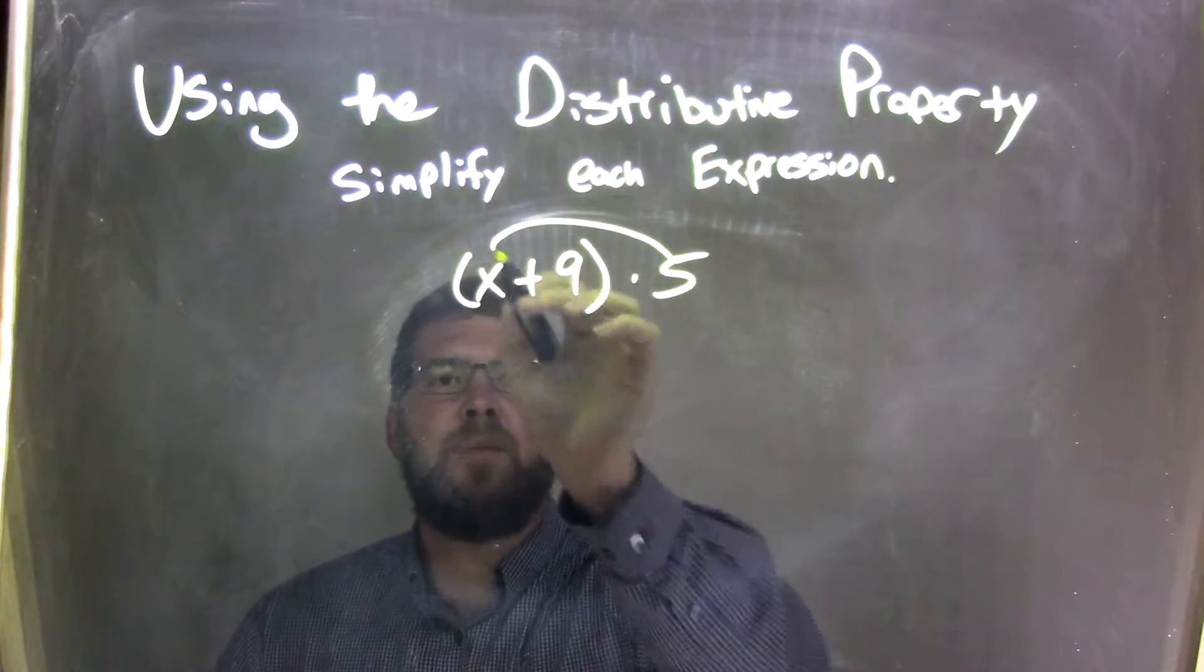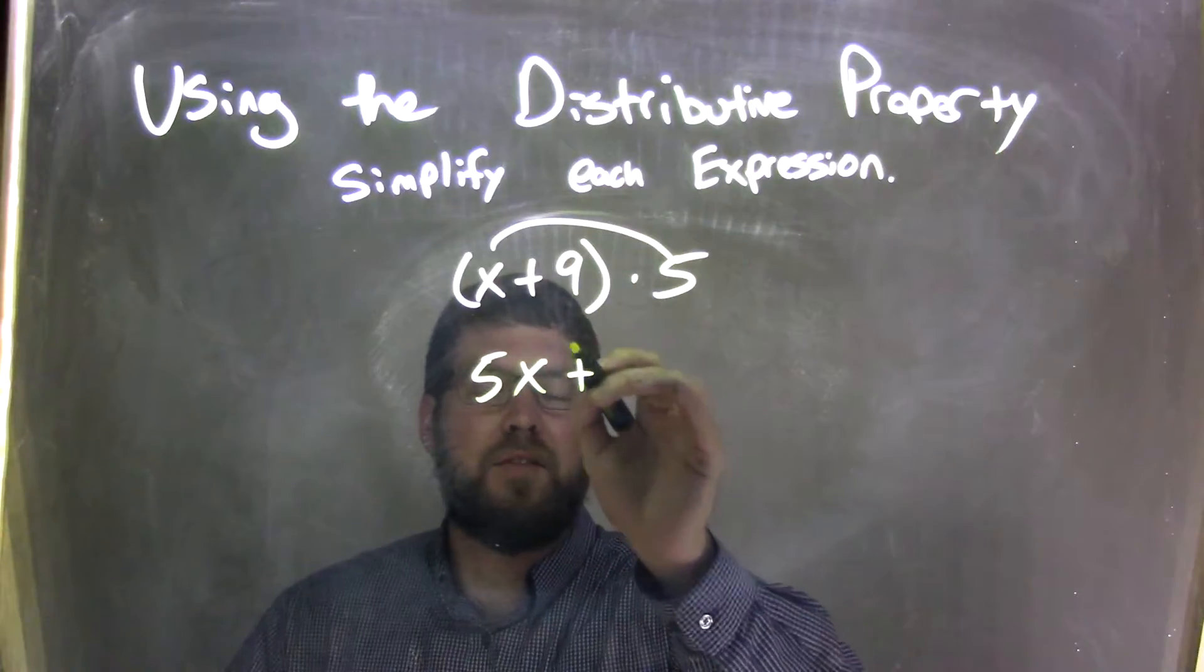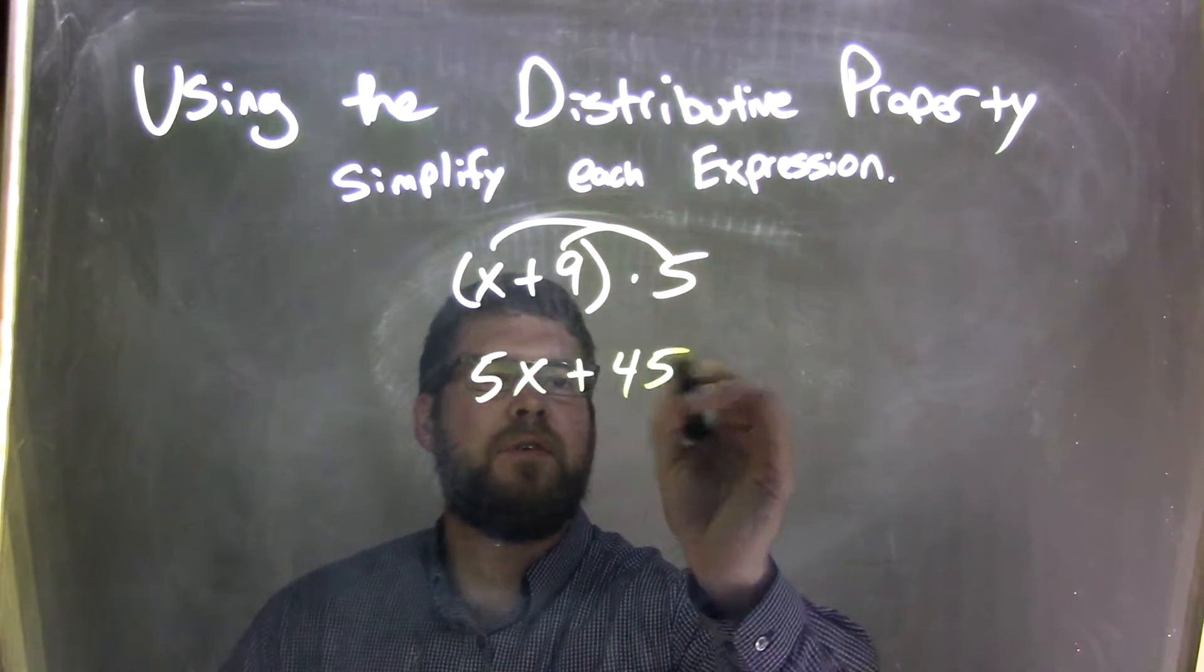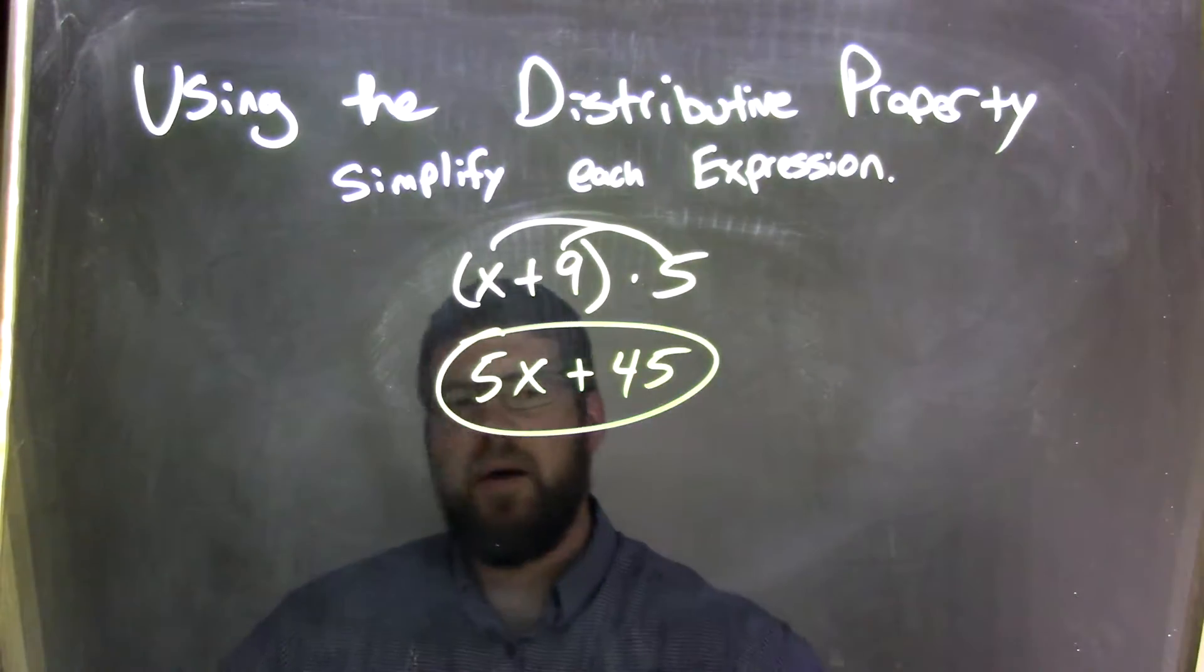Multiplication: 5 times x first is 5x, plus sign comes down, and 5 times 9 is 45. And that is actually our final answer. These are not like terms, so we cannot combine them.